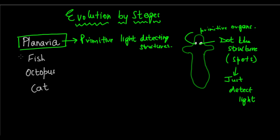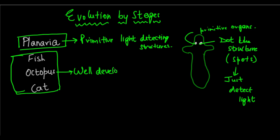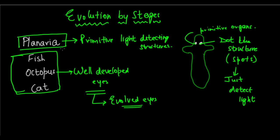Fish and octopus and all these other organisms have very well-developed eyes. They have well-developed, evolved eyes. On the other hand, planaria has very primitive eyes — they have not evolved. So this is an example of evolution by stages.